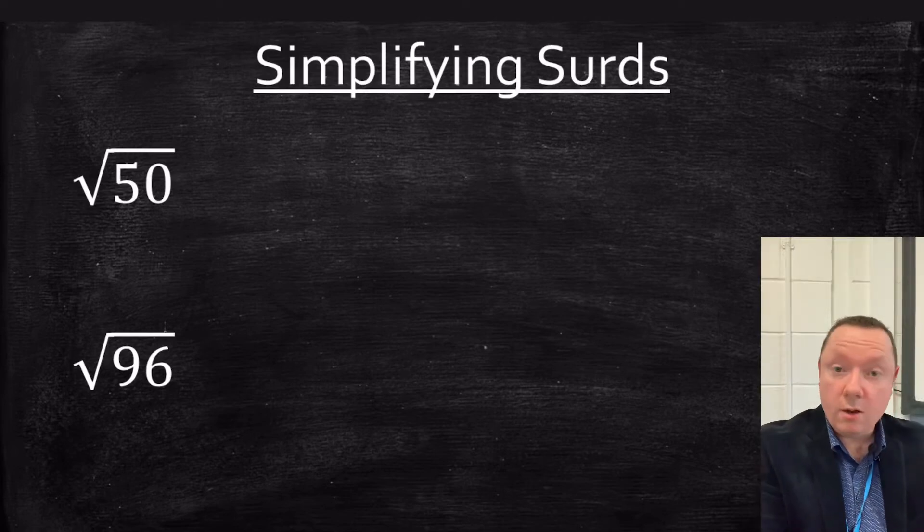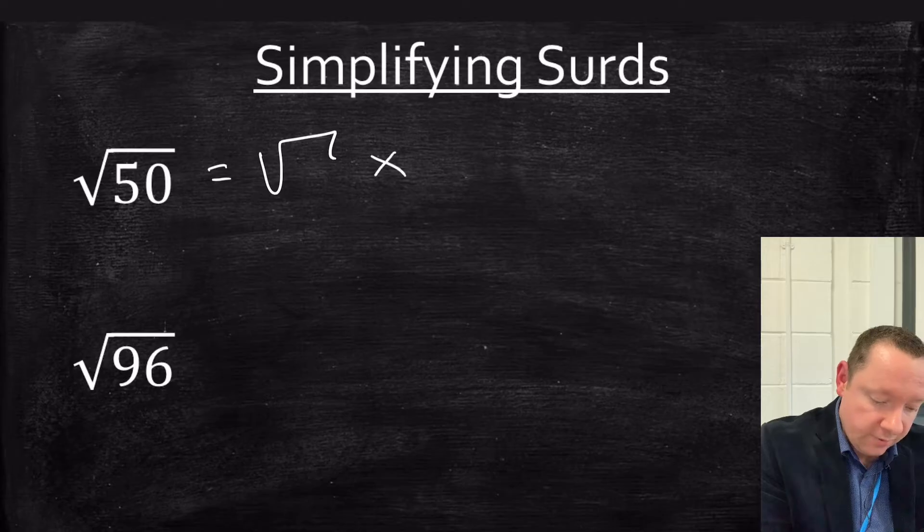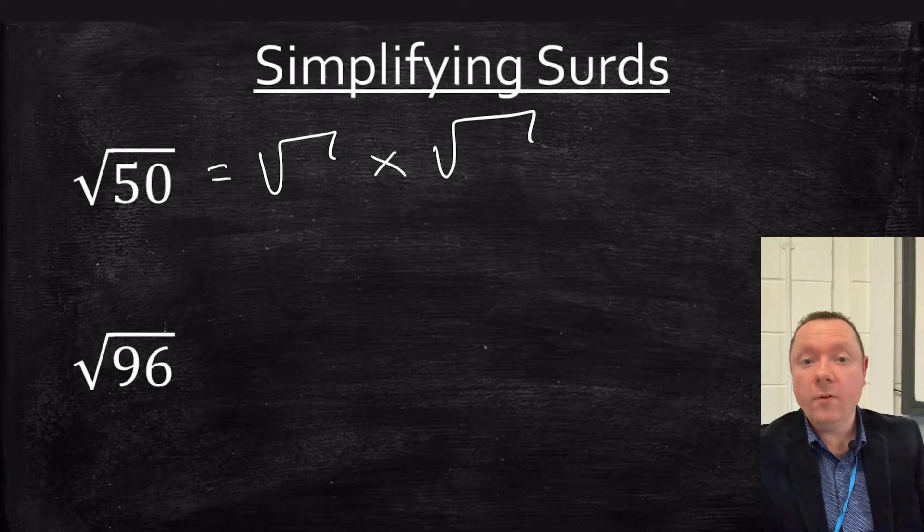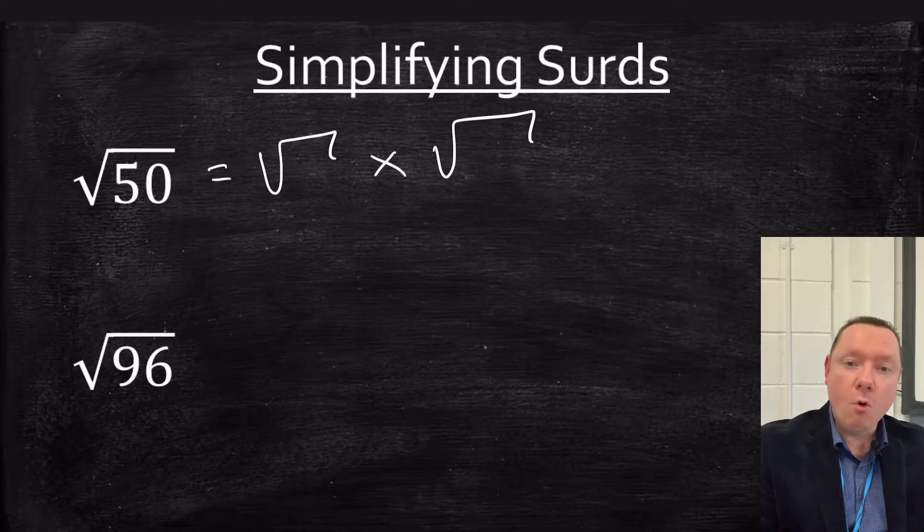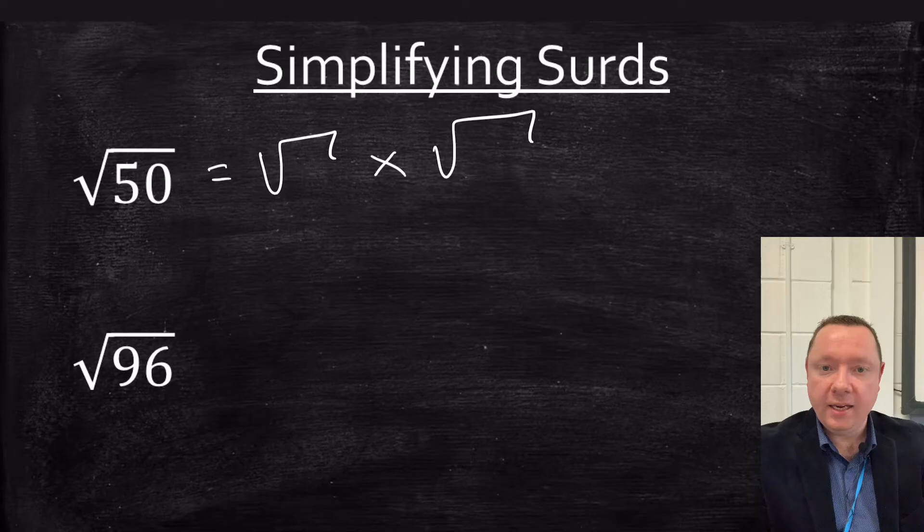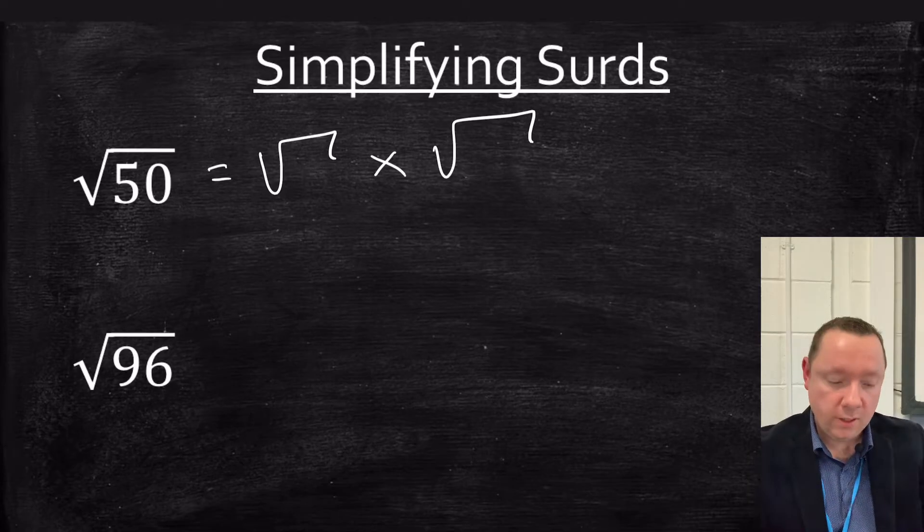Simplifying surds. I've got square root of 50 and I want to simplify it. So I'm looking for two numbers that times together to make 50. One of them has to be a square number. So I've got the option of 1, 4, 9, 16, 25, 36 and so on. To find a square number you just take a number and times it by itself. The answer is a square number.